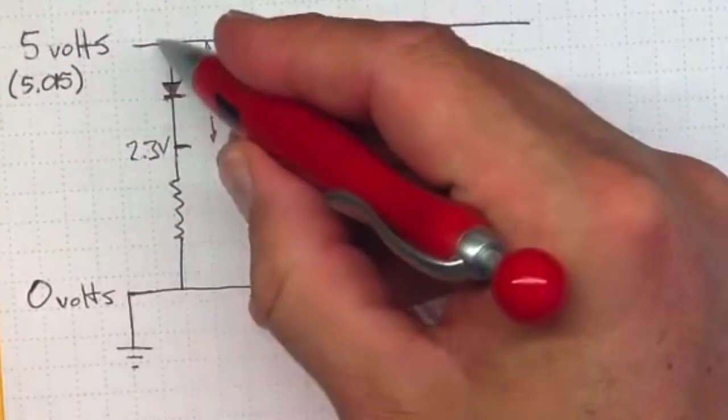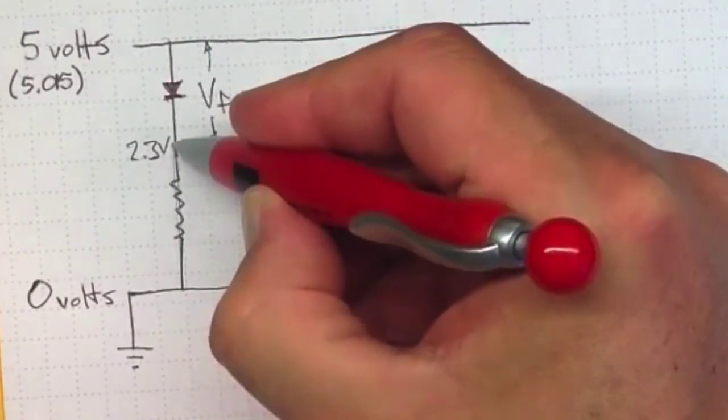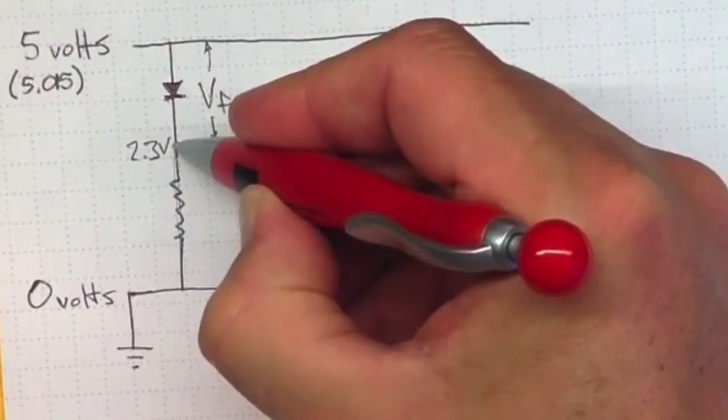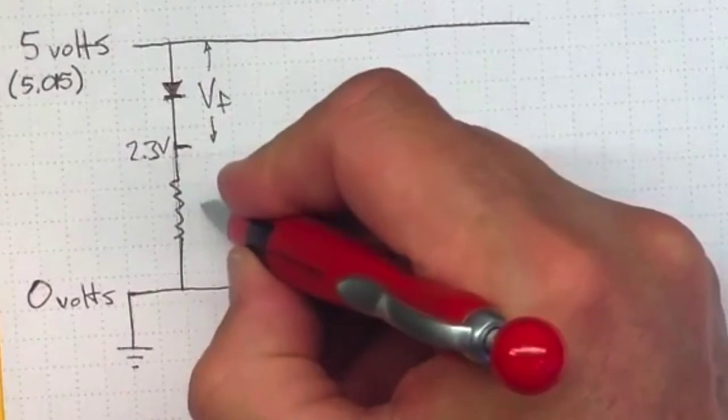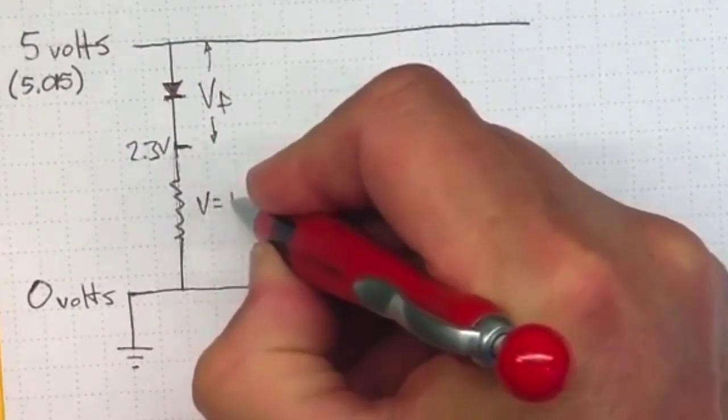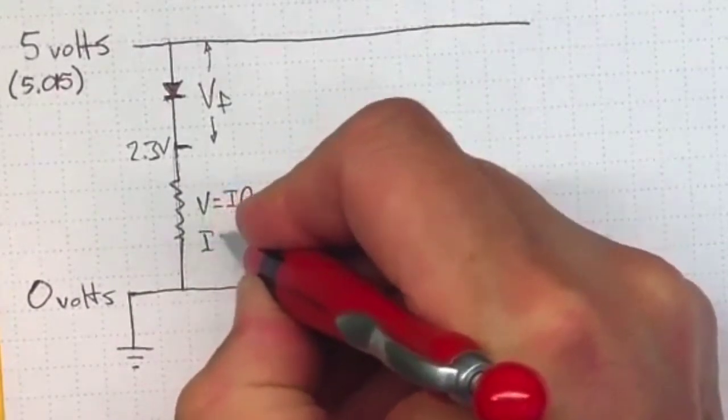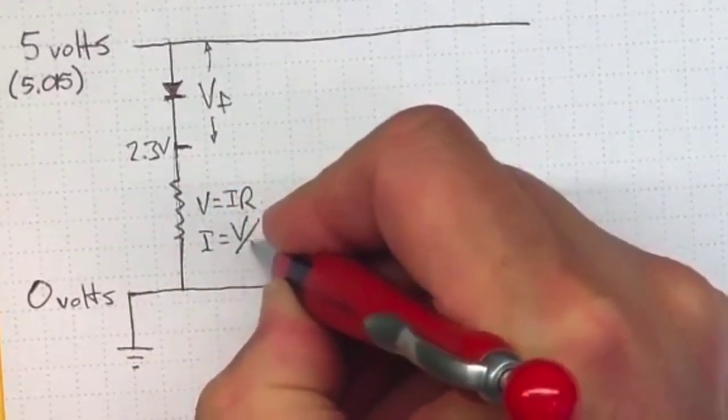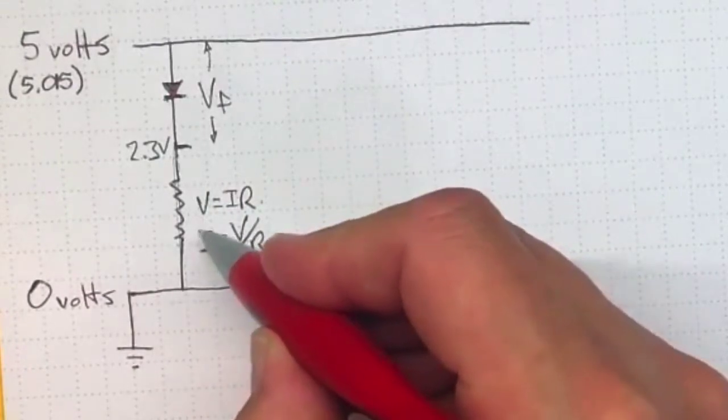And the amount of current that flows in the circuit will depend on the resistance that we have here. So Ohm's law will apply, and we'll be able to figure out how much current flows. So V equals IR, or I equals V over R. The smaller the resistance, the more current is going to flow.